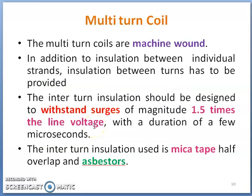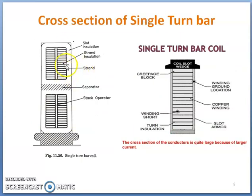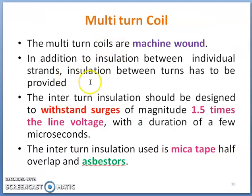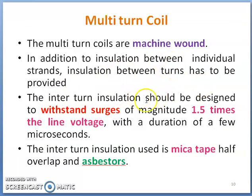Coming to multi-turn coil: multi-turn coils are usually machine-wound. In addition to insulation between individual strands, insulation between turns also has to be provided. In case of single turn coil there is only strand insulation, but in case of multi-turn coil, inter-turn insulation is also required. The thickness of inter-turn insulation is decided by taking into account over-voltage during surges, and it should be designed to withstand surges of magnitude 1.5 times the line voltage with a duration of a few microseconds.